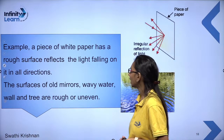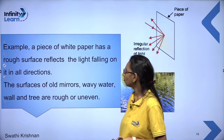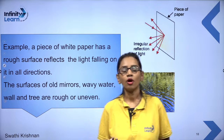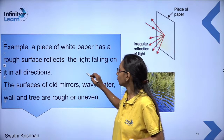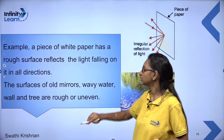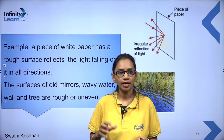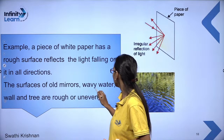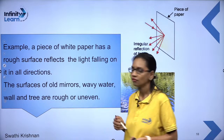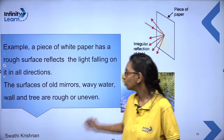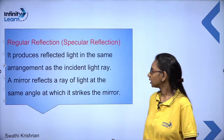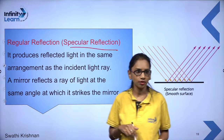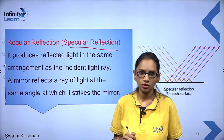For example, a piece of white paper has a rough surface and reflects light falling on it in all directions. The surfaces of old mirrors, wavy water, and trees are rough and uneven — these are examples of rough surfaces that cause irregular reflection. Regular reflection is also called specular reflection. It produces reflected rays in the same arrangement as that of the incident rays.